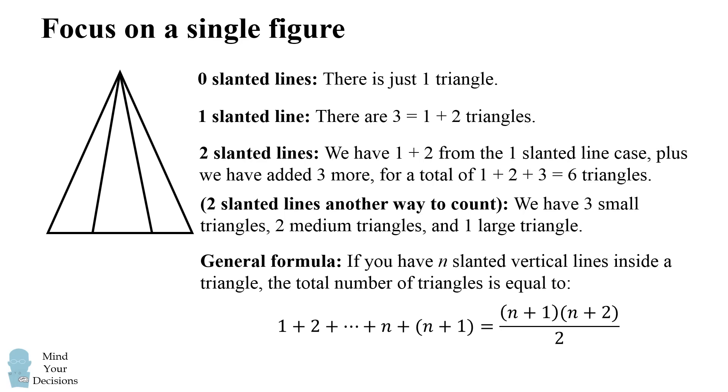If we continue this pattern, we could guess the general formula. If you have n slanted lines on the interior, the total number of triangles will be equal to one plus two, plus all the way going to n, plus n plus one. And the sum of this will be n plus one times the quantity n plus two all over two.